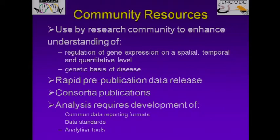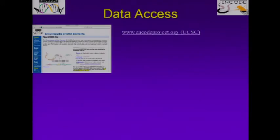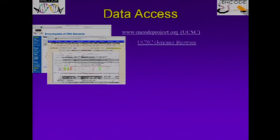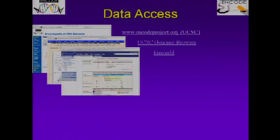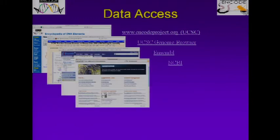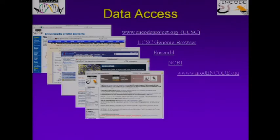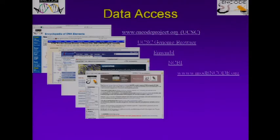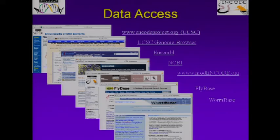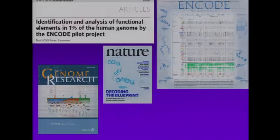We also want to get information out on how to use the data through consortial publications. The analysis has required the development of common data reporting formats, data standards, and analytical tools. We have a number of portals for the community. The first to access human data is through encodeproject.org through the UCSC group. You can also get data from the UCSC browser — this is human and mouse — as well as Ensembl. All the data is being pushed out to NCBI. You'll hear today more about the MODENCODE portal at modencode.org, and data is also going out to FlyBase and WormBase.